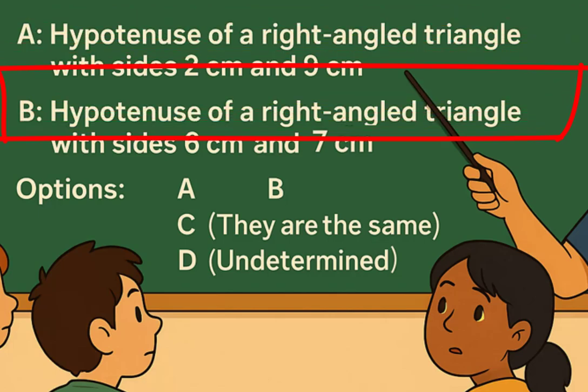Option B: the hypotenuse of a right-angled triangle in which two of the sides are six centimeters and seven centimeters. And your choices are option A, option B, option C - they are the same, or option D - undetermined.